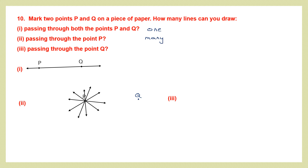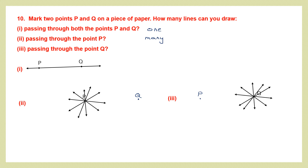How many lines can you draw passing through the point Q alone? We have point Q, and we can draw many lines through it — one, two, three, four. You can draw many lines passing through Q as well.